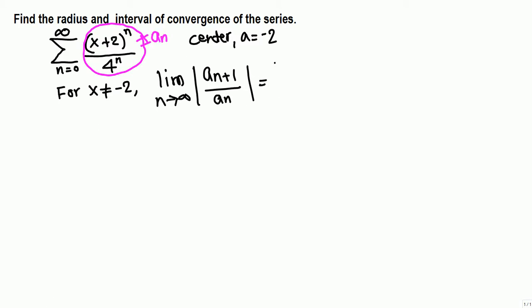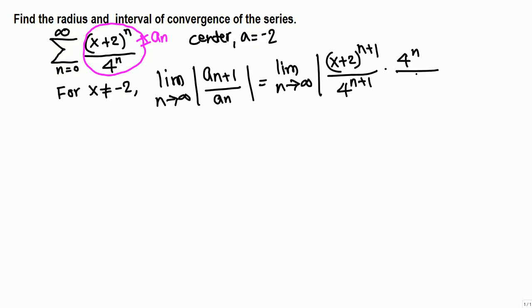Let's evaluate this limit: limit as n goes to infinity of a_{n+1}, which is the same thing but we replace n by n+1, so we get (x+2)^(n+1) over 4^(n+1), divided by a_n — which is the same as multiplying by the reciprocal of a_n — so 4^n on top over (x+2)^n.